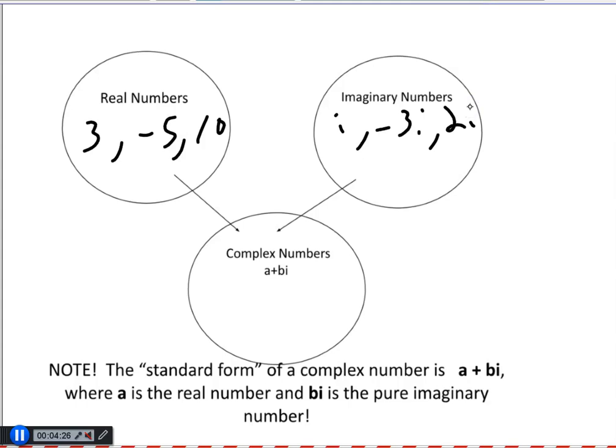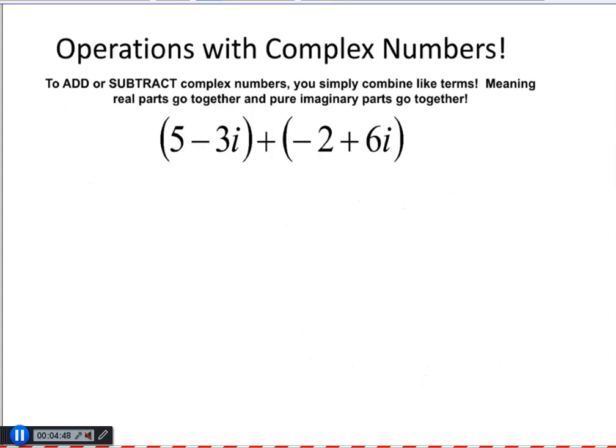A complex number is when we put these two together. So, if I have something like 5 minus 3i, that is a complex number. Note, standard form is always put the real number first. And put the imaginary number second.